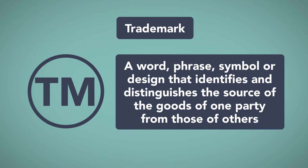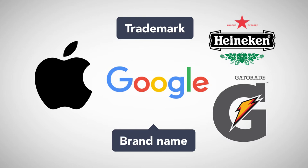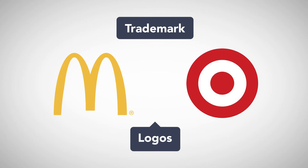A trademark is a word, phrase, symbol, or design that identifies and distinguishes the source of the goods of one party from those of the others. Trademarks typically signify a brand name such as Google, Apple, Heineken, or Gatorade. Trademarks also cover logos, such as Target's Bullseye logo or McDonald's Golden Arches.